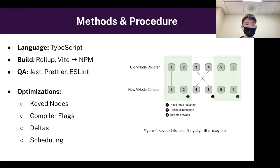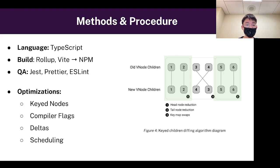I use TypeScript, Rollup, Vite, Jest, Prettier, and ESLint to create my project, and I publish it on NPM. I use several optimizations, including key nodes, compiler flags, deltas, and scheduling. In Figure 4, you can see how I optimize key nodes.